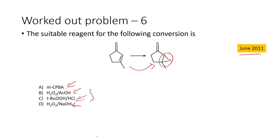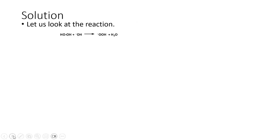MCPBA has no additional reagents, so this is close to neutral conditions. Options B and C have acid present (H+), and option D has sodium hydroxide, a base. So we have acidic, neutral, and basic reaction conditions. We need to find exactly what is required for this particular reaction. If we use a base, hydrogen peroxide in the presence of a base is converted into a peroxide anion. If acidic conditions are used, protonation of the carbonyl compound would happen instead.